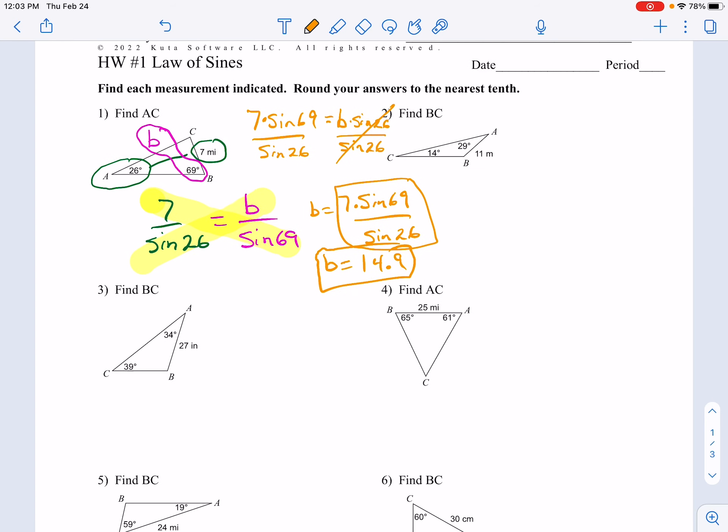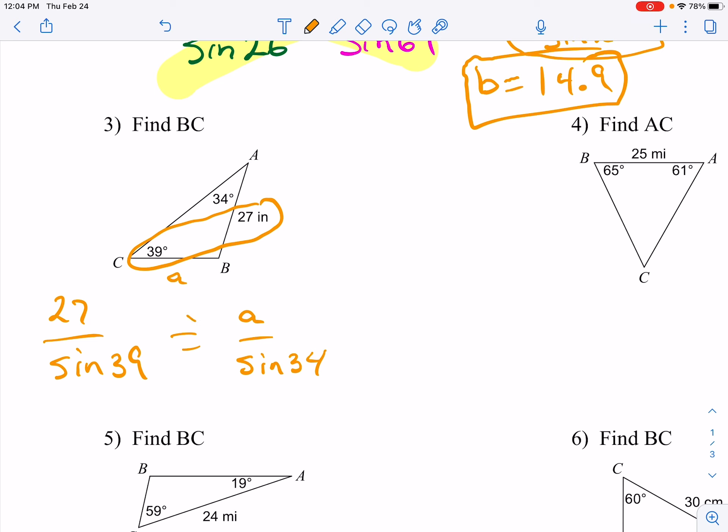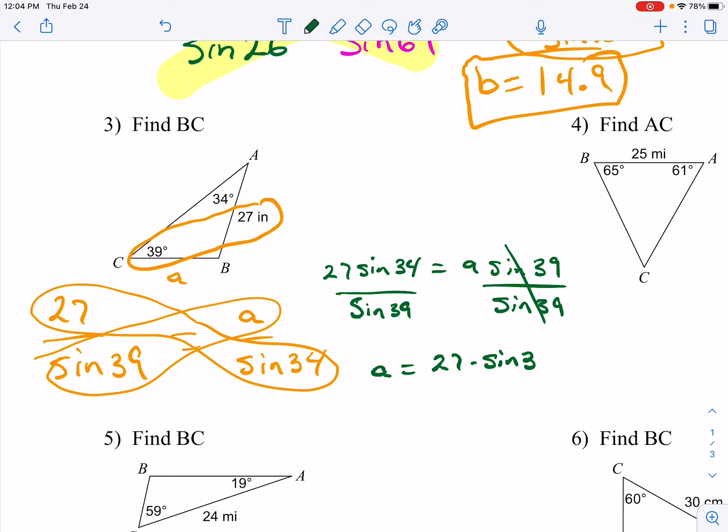On question number three, always start with the side and angle that you have across from one another. So 27 over the sine of 39 is equal to, we're finding side BC, so we're finding little a. A over the sine of 34. We cross-multiply. 27 sine 34 will equal a times the sine of 39. Divide both sides by the sine of 39.